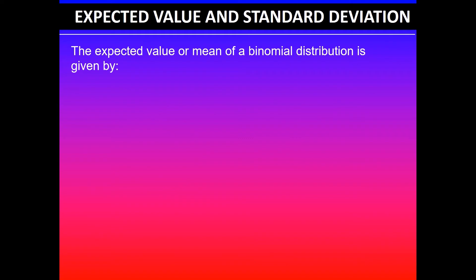The expected value or mean of a binomial distribution is given by μ = np, where n is the number of trials and p is the probability of success. Remember expected value and mean are interchangeable. They mean the same thing. In this case, np will give you the expected value.